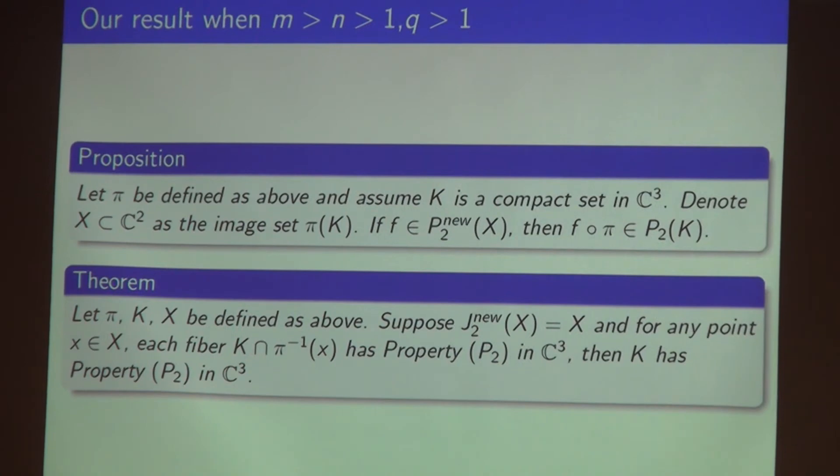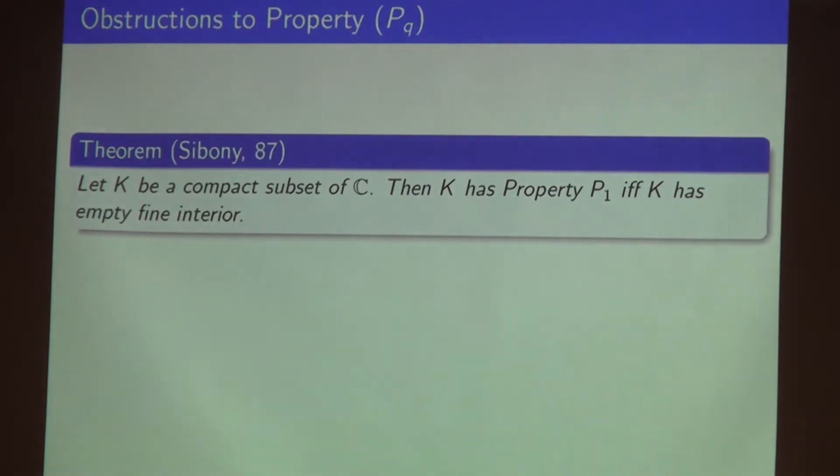This generalizes Sibony's result under this case. The argument essentially follows the idea in the original proof. By this lemma you can make it. The second part of my work is concentrated on obstructions to property P_Q. It's motivated by Sibony's characterization on property P_1 on the complex plane.